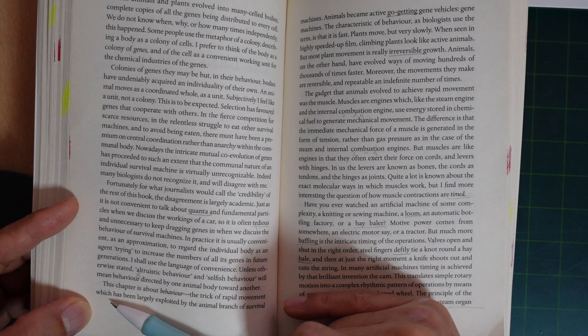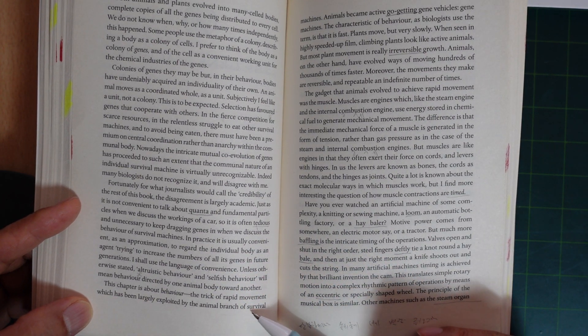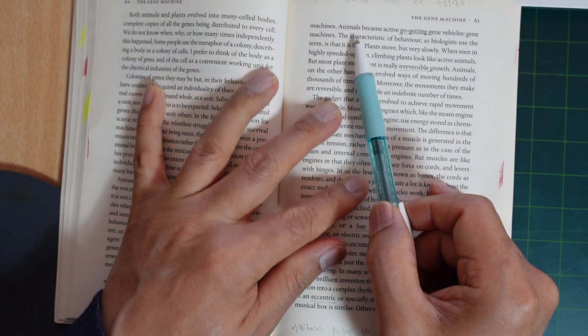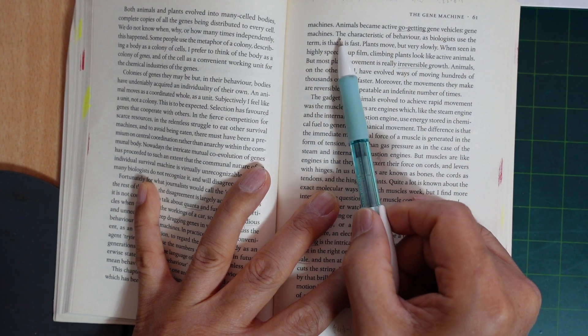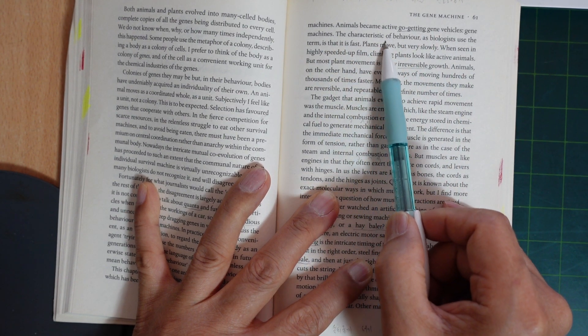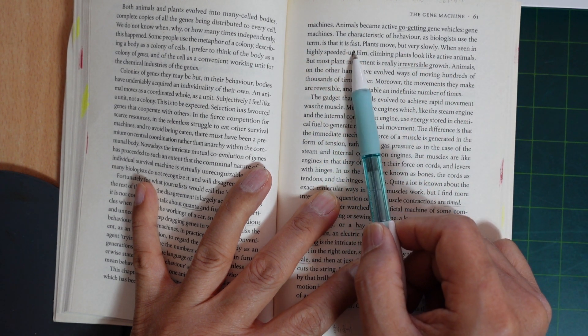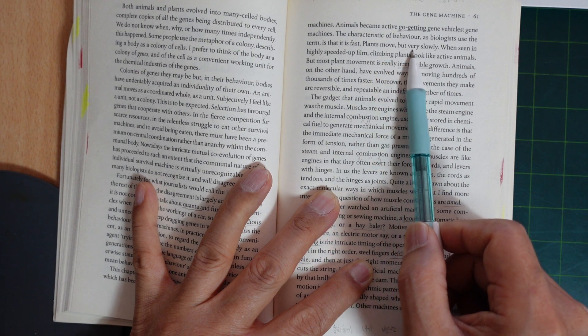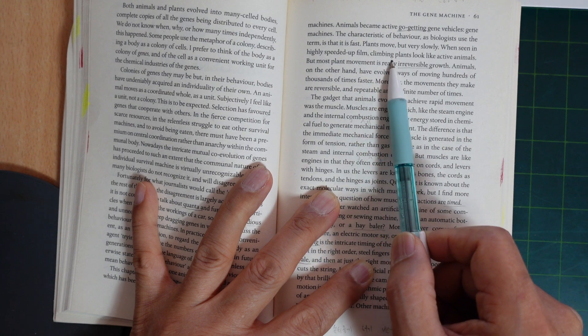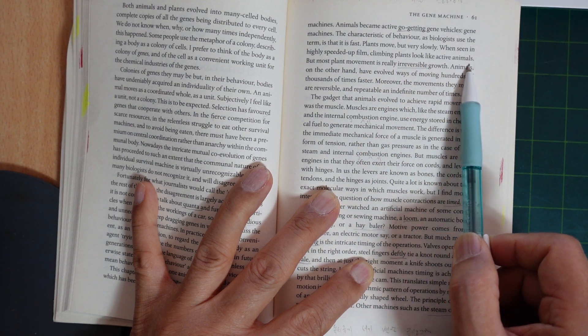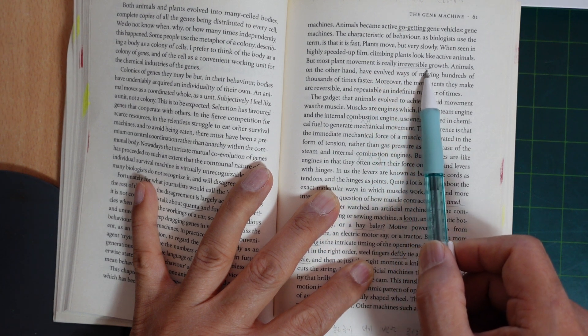The trick of rapid movement, which has been largely exploited by the animal branch of survival machines. Animals became active gene-getters. The characteristic of behavior, as biologists use the term, is that it is fast. Plants move, but very slowly. When seen in highly sped-up film, climbing plants look like active animals. But most plant movement is really irreversible growth.